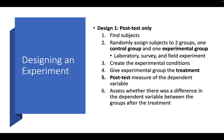We perform what is called a post-test measure of the dependent variable that we're interested in, and we assess whether there was a difference in the dependent variable between the control group and the experimental group after the treatment was applied. If there was a difference, then we can determine that the treatment — that independent variable — causally affected the dependent variable, because we've controlled for all other factors since we randomly assigned subjects to two different groups.